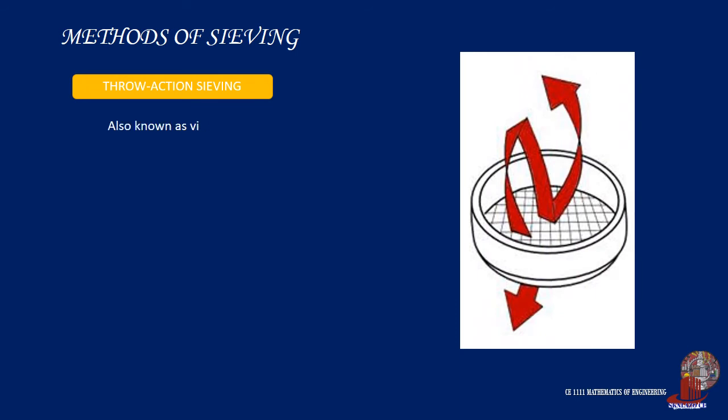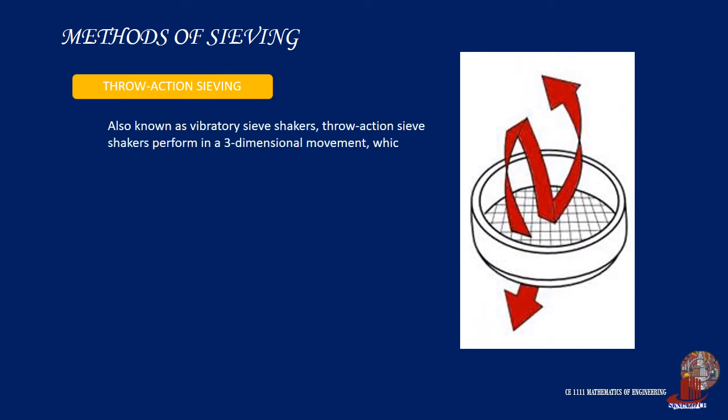There are different methods for carrying out sieve analysis depending on the materials to be measured. The first is throw-action sieving. Here, a throwing motion acts on the sample. The vertical throwing motion is overlaid with a slight circular motion, resulting in distribution of the sample over the whole sieving surface. Particles accelerated in the vertical direction are thrown upwards; in the air, they carry out free rotations and interact with the openings in the mesh when they fall back.